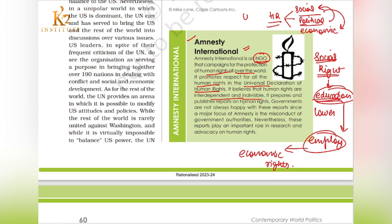Amnesty International prepares and publishes reports on human rights. It is responsible for conducting surveys and research, and checking the situation in different countries at the world level. It publishes reports on the condition of human rights in different countries — whether governments are granting rights to their populations or not. Since it is an NGO, no government influence is there on the Amnesty International reports, so these reports expose the actual conditions.